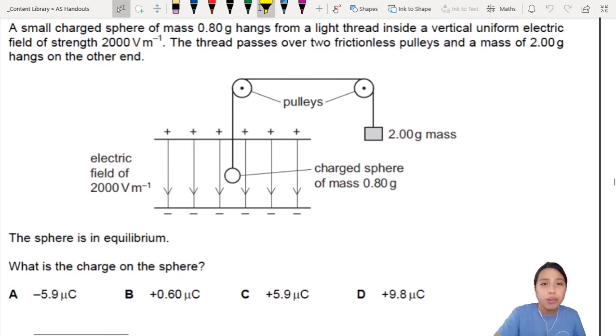So you have a small sphere with some mass in a vertical uniform electric field strength given to us. That's important info. Thread passes over two frictionless pulleys. Oh it's frictionless, so no other forces involved. And a mass of 2 grams on the other end. The sphere is in equilibrium. That's important and that's very helpful. What is the charge on the sphere?